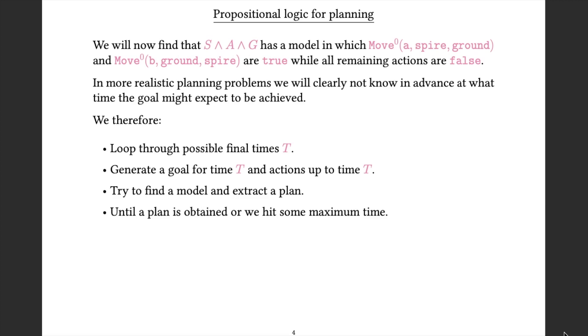Because in a real problem we won't know at what point the goal might actually be achieved, we start with a small time limit on how long a plan might last for, and we increase it. So we start with a final time t of 1, and we generate a goal that corresponds to that time, and we generate all the actions up to that time, and we try and find a model. And if we can't, because our SAT solver returns an indication that the sentence is unsatisfiable, then we generate the whole thing again, but we increase the time by 1, and try and extract a plan again. And we keep doing this until either we find a plan or we hit some maximum time and decide that we're going to give up.